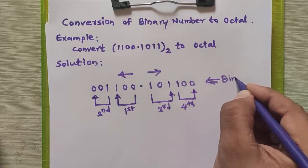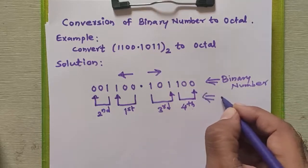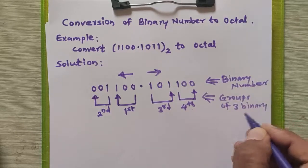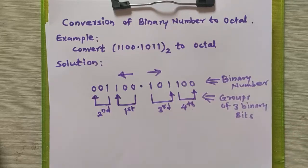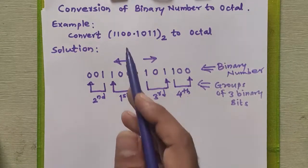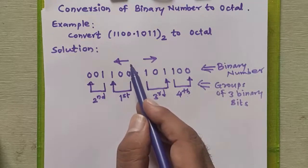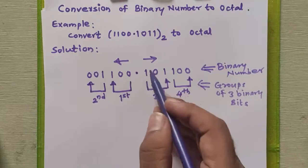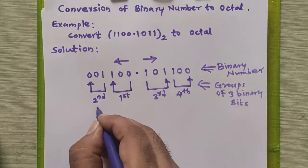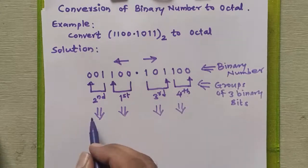This was the binary number given to us, and these are the groups of three binary bits. In this process of binary to octal conversion, we form groups of three bits — for the integral part, from right to left; for the fractional part, from left to right. We got four groups in this problem. To get the exact octal equivalent, we need to convert each group into its decimal equivalent.